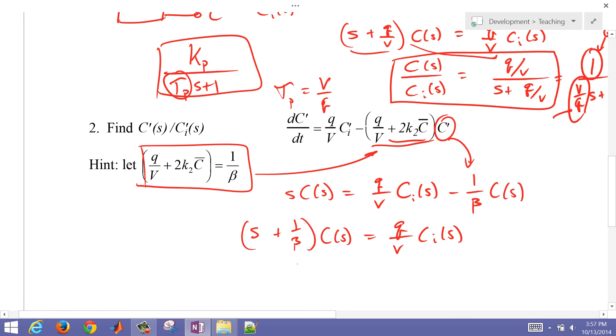So let me go ahead and just do a transfer function form. And that's just going to be Q over V divided by S plus 1 over beta. And if I multiply the top and the bottom by beta, then I have beta times Q over V divided by beta times S plus 1.